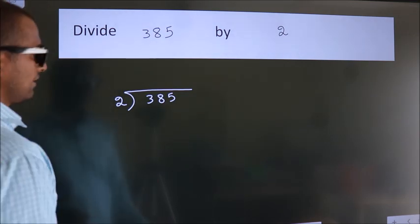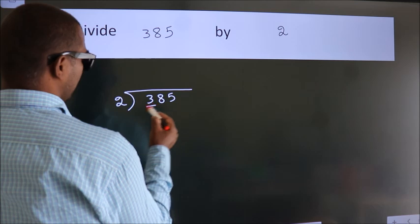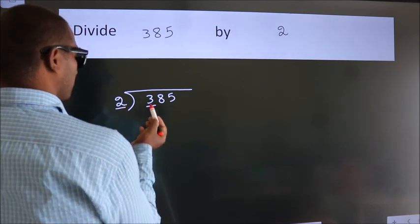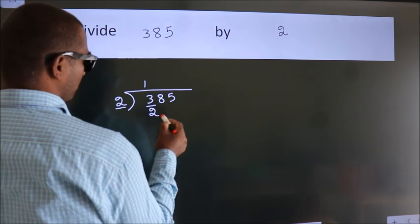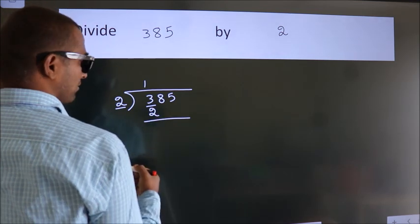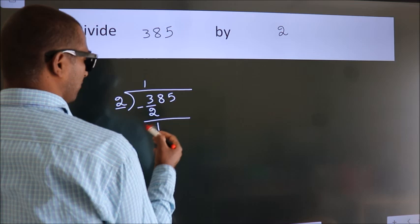Next, here we have 3, here 2. A number close to 3 in 2 table is 2 1s 2. Now, we should subtract. We get 1.